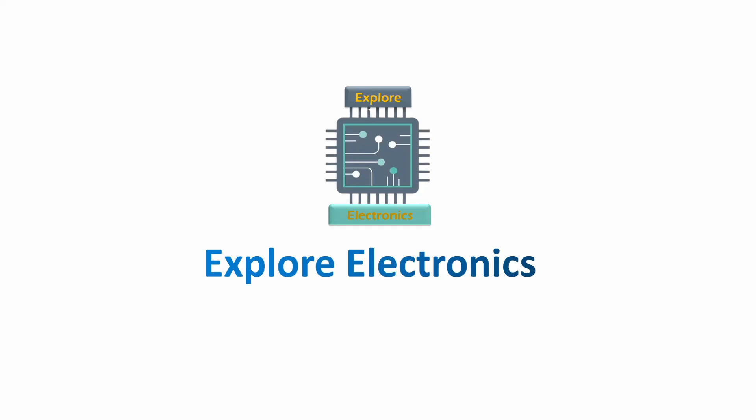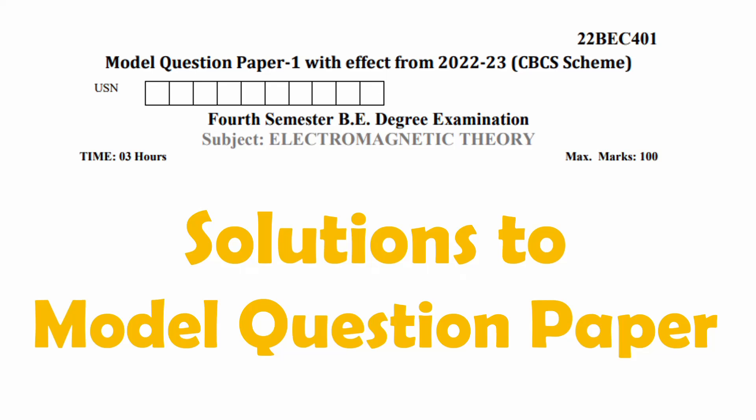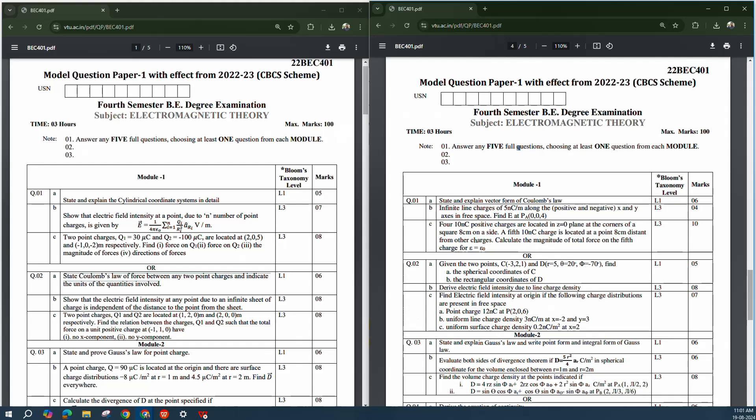Hey guys, welcome back to Explore Electronics. This video is about solutions to the model question paper of the subject Electromagnetic Theory, code 22BEC401. There are two model question papers released by VTU for this subject. By looking at those two model question papers, you can find very important questions — theory questions which are very important and you can easily expect in the exam.